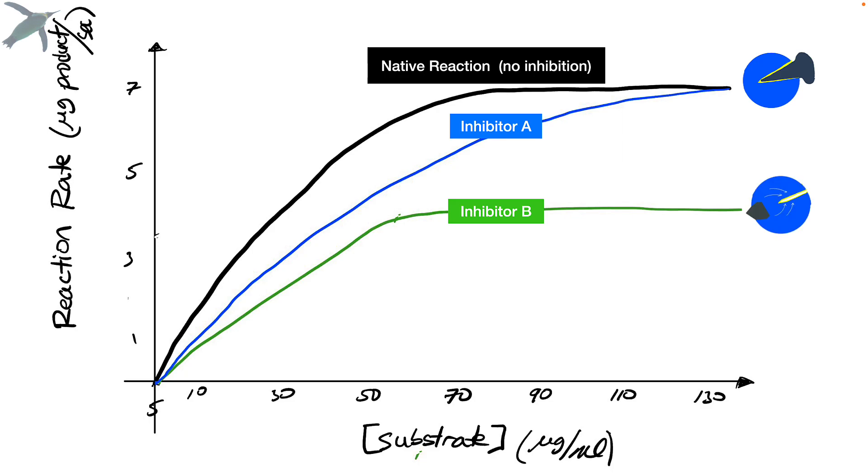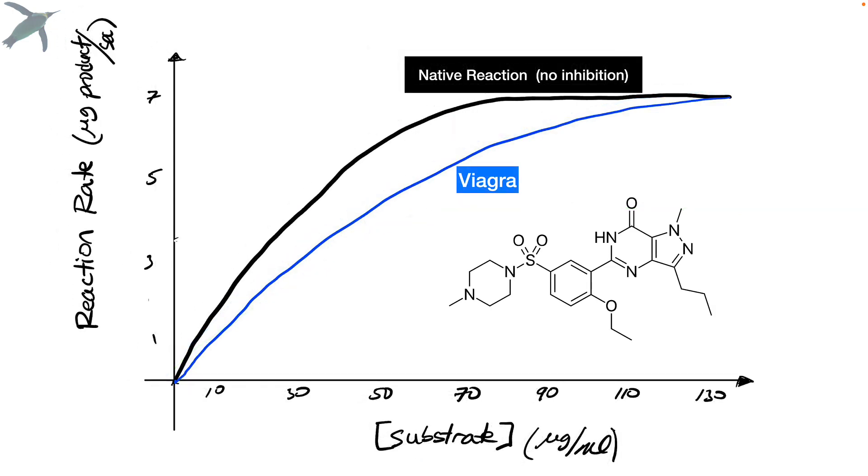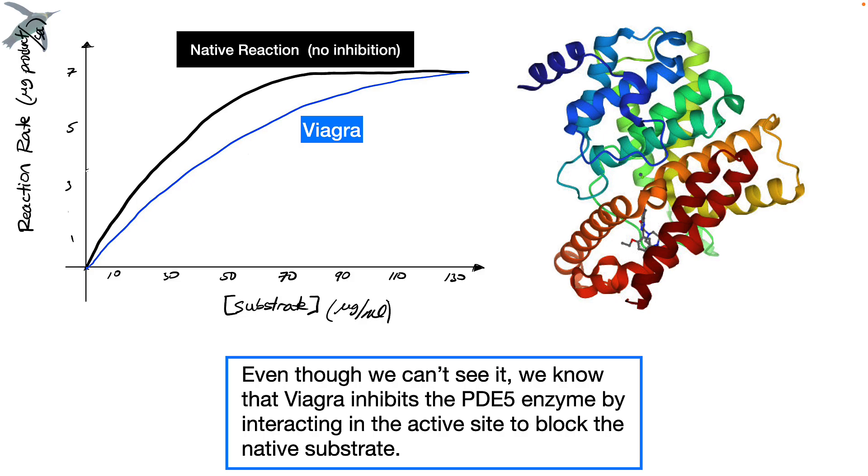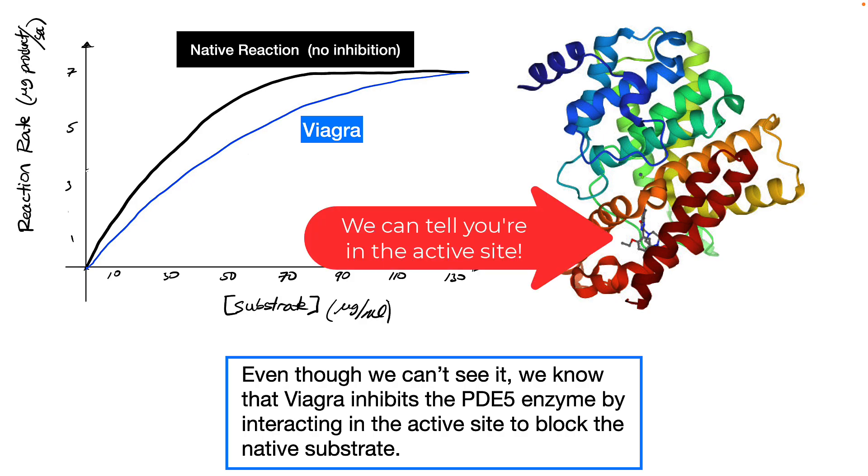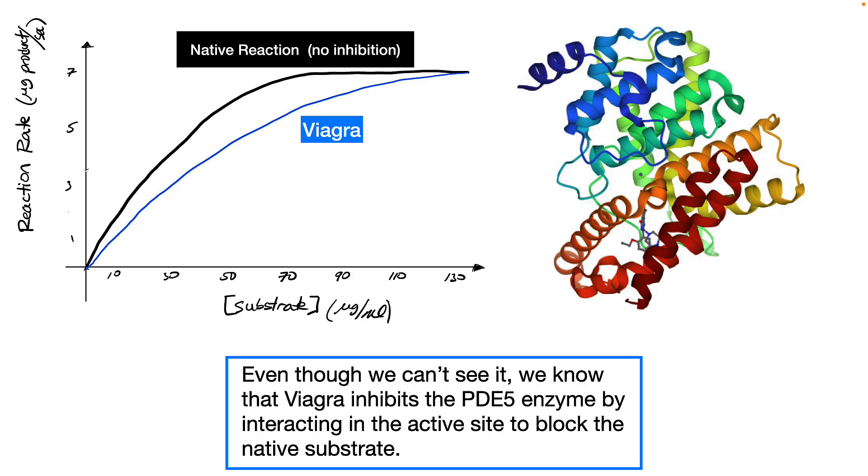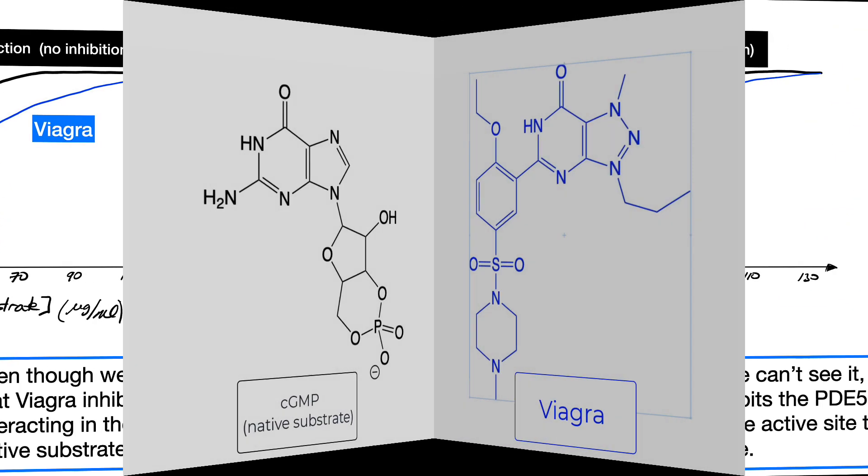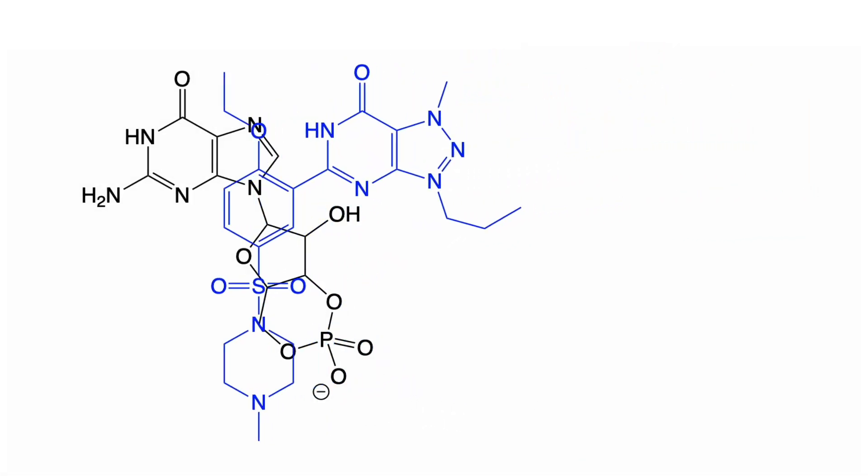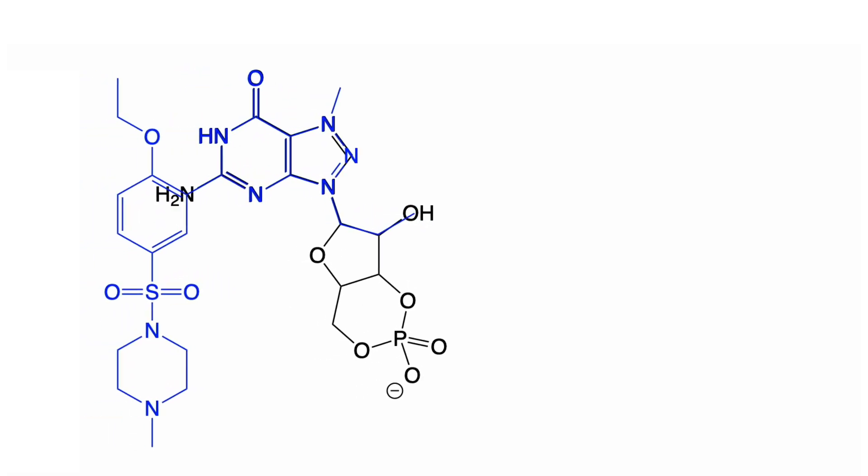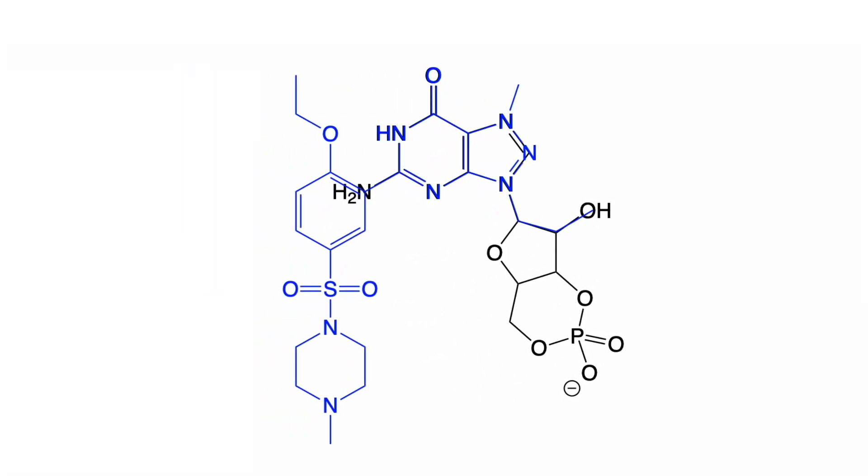Drumroll please, this is how Viagra works. So even though we can't watch it, we know because of enzyme kinetics that the Viagra molecules insert themselves right in the active site of that PDE5 enzyme, and that's how they do their magic. And by the way, if you look at the chemical structure of Viagra compared to the native substrate, shouldn't be a big surprise.